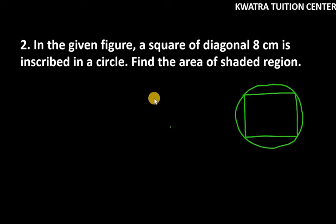Hello everyone, let's start with question number 2. It says a square of diagonal 8 cm is inscribed in a circle. This means that we have a square inside the circle and the diagonal of it is 8 cm given to us. Now we have to find the area of shaded region, and this is the area which is shaded in the given figure.